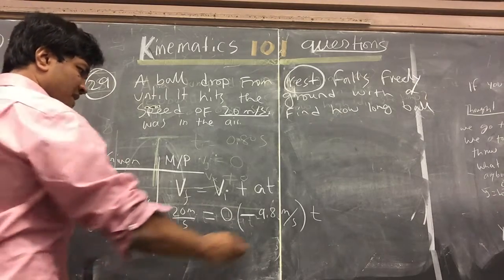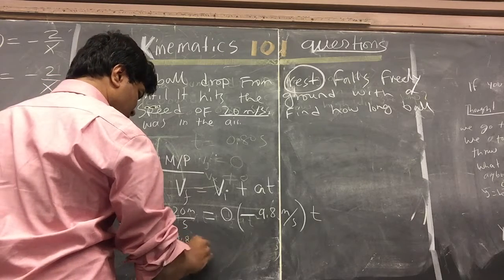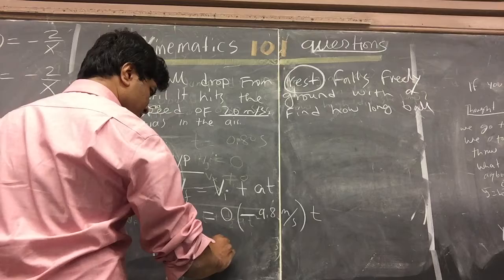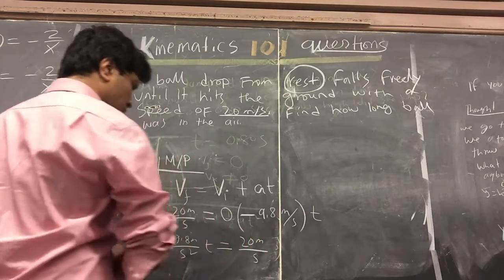So we're going to bring this over here. 9.8 meters per second squared times t is equal to 20 meters per second. OK.